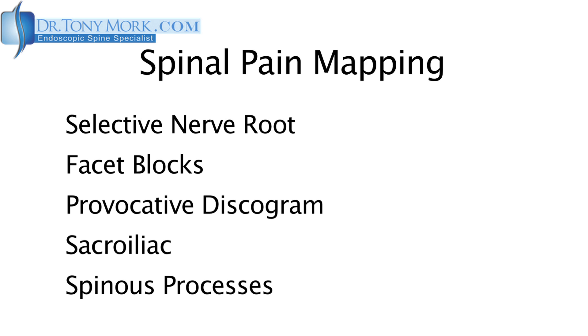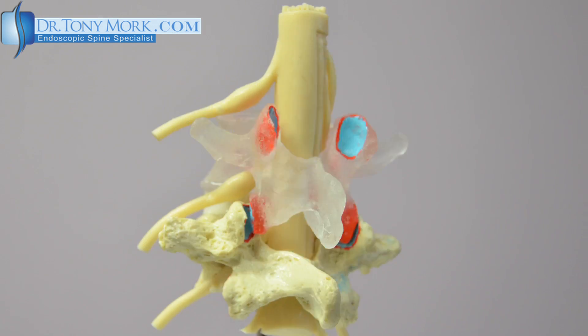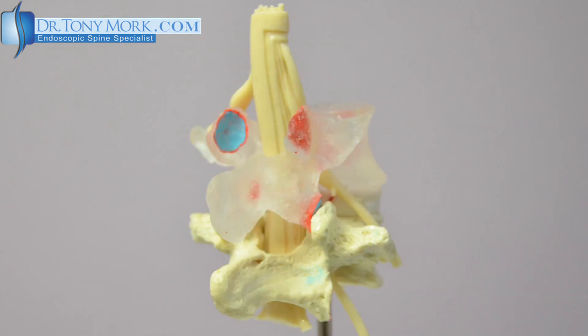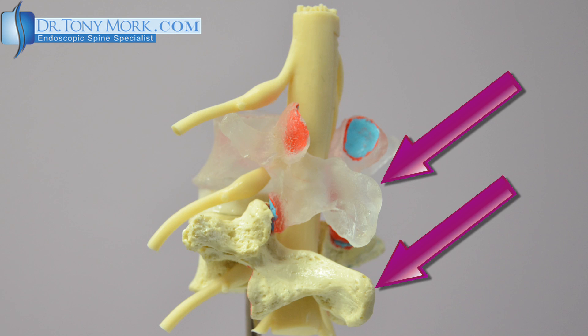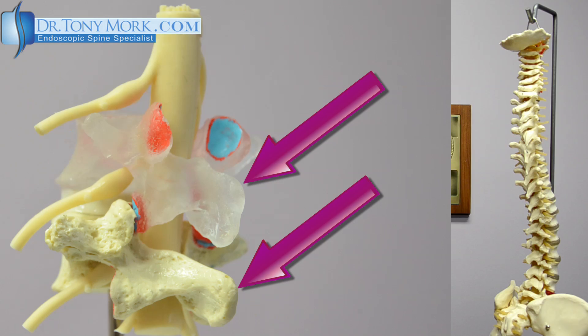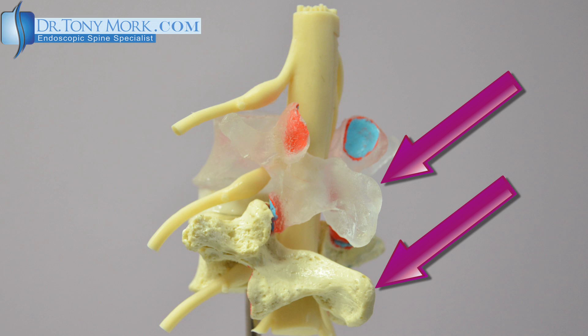The last type of spinal pain mapping I utilize is injecting the spinous process. The spinous process is the tip of the spine, oftentimes where one might get a massage. The ligaments may be pulled off of these, causing chronic pain. They may get pulled off either from degenerative changes or from a motor vehicle accident where there's a snapping sensation and the tendon pulls off. It never really reattaches, but can cause pain because the ligament riding over the tip of the process can actually irritate the nerves there. Putting some Novocaine in this area and having the pain go away would confirm that the spinous processes are problematic and may need some surgical treatment.